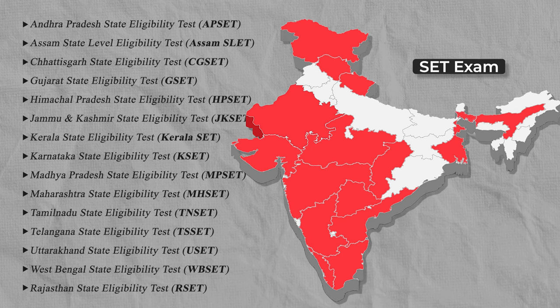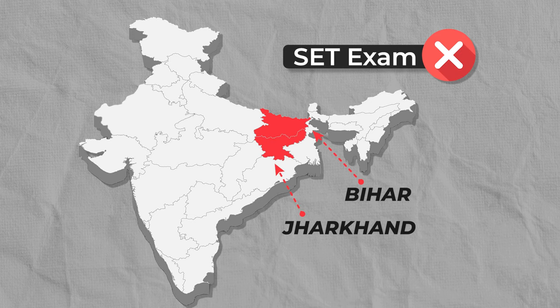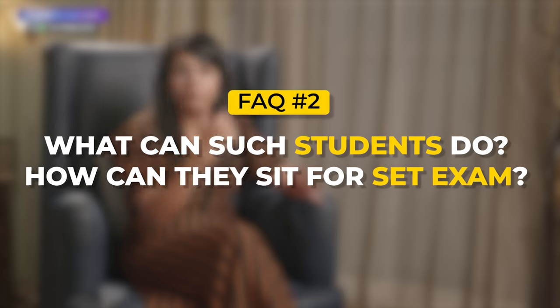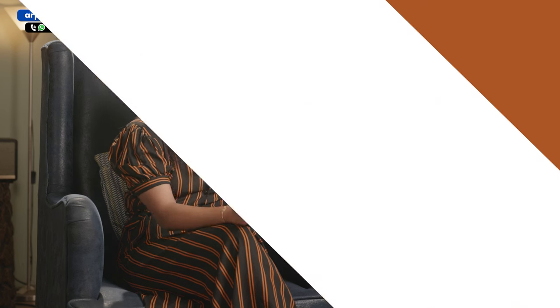The second question is from students whose states don't conduct their own SET exams — for example, states like Bihar and Jharkhand do not conduct SET exams. How can such students sit for SET? As already discussed, a student can give the SET exam of any state, so they can give the SET exam of a state that is near to their hometown or whichever is convenient. For instance, if you live in Bihar, you can give UP SET.